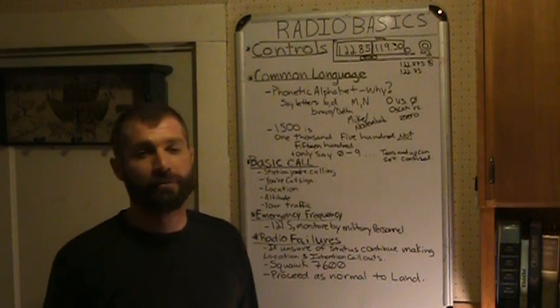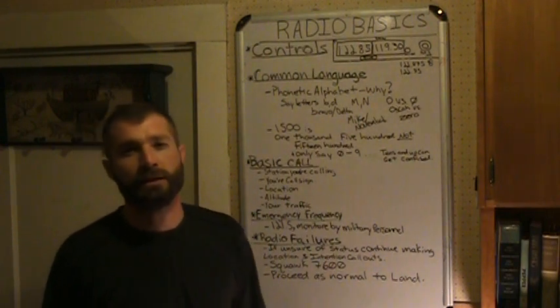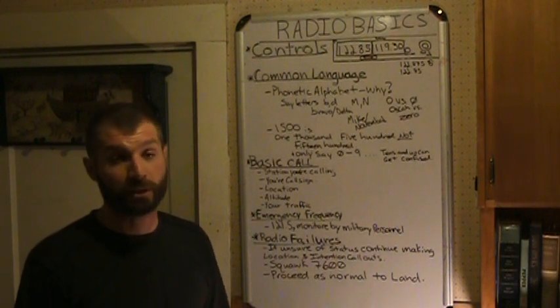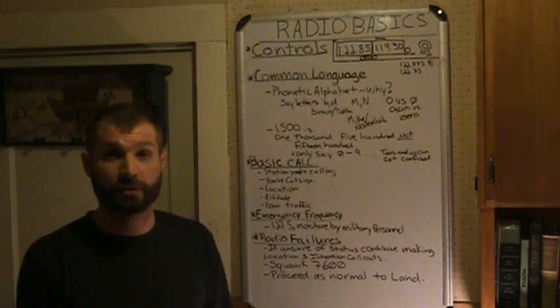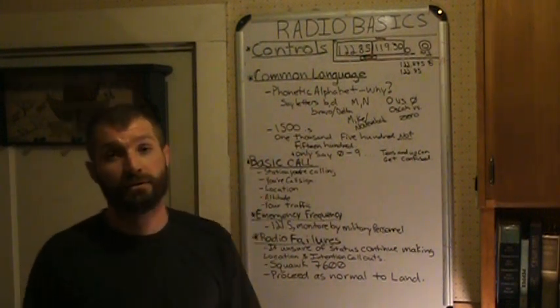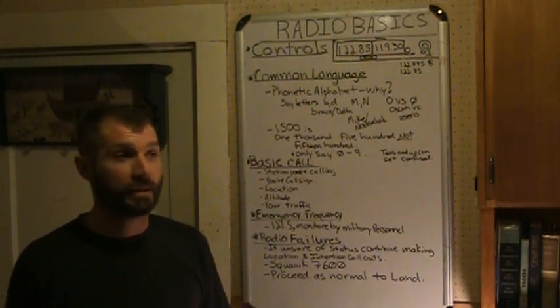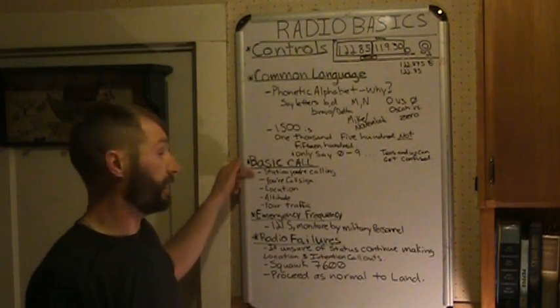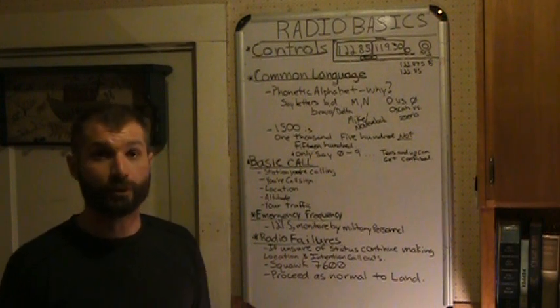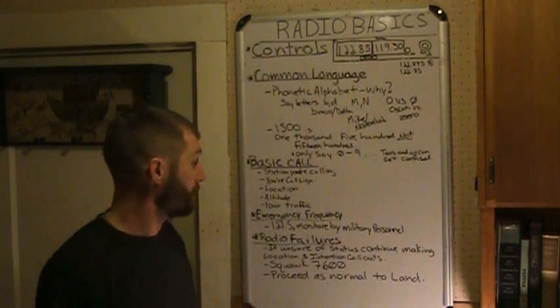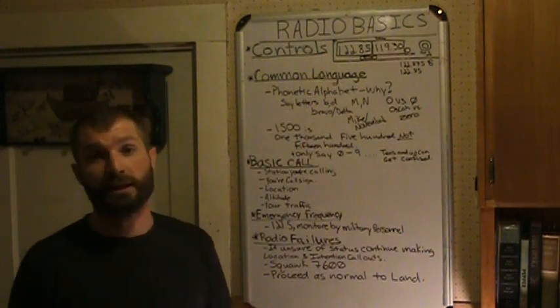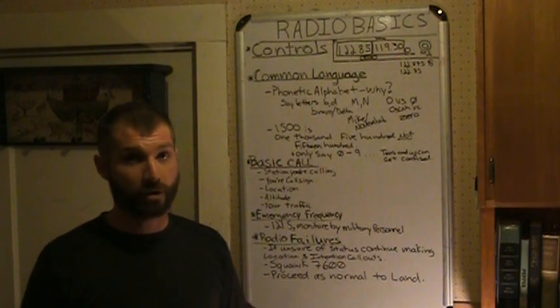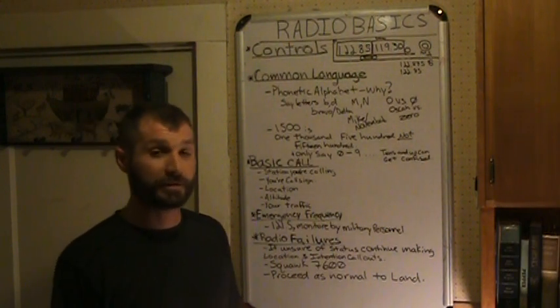A basic call. So a basic call structure varies a little bit with the type of call you're making. The example that I'm going to use is we just picked up at Hillsborough and we're at the hover cone. First thing you want to start with is the station that you're calling. You want to get the person's attention who needs to be listening to your radio call. So if we're sitting at the cone at Hillsborough, you say Hillsborough Tower. That's their call sign. Next thing, you want your own call sign out there. Hillsborough Tower, this is Helicopter November 351 Juliet Delta.